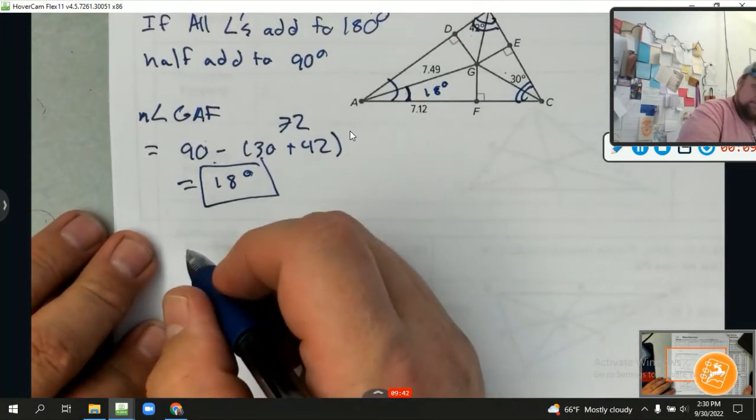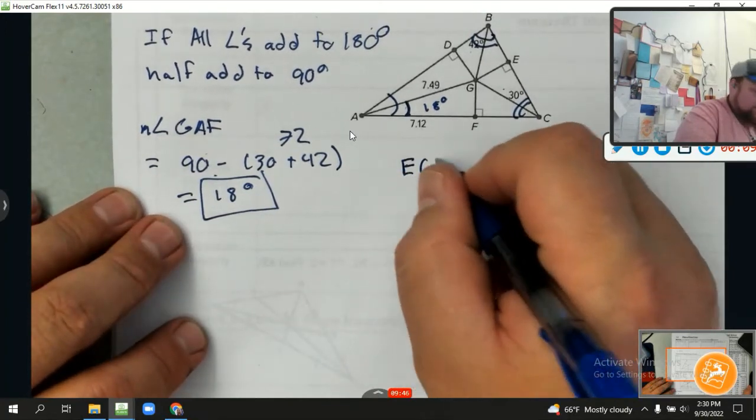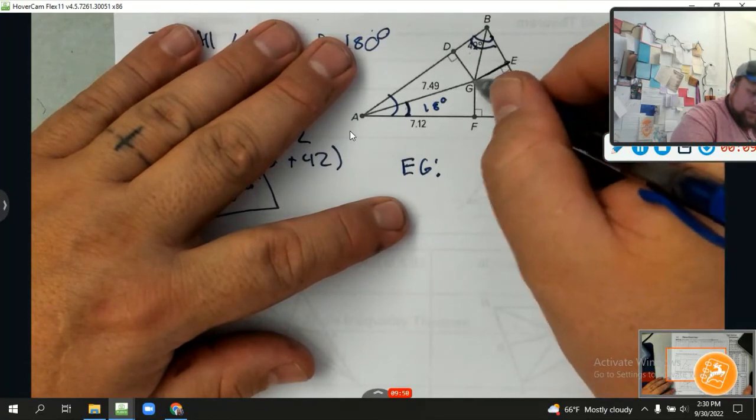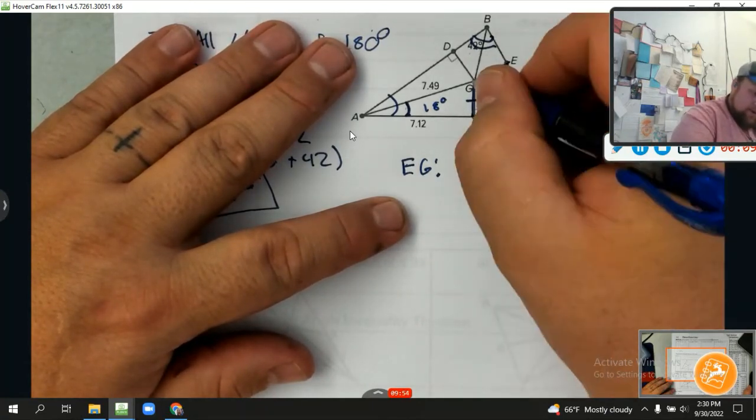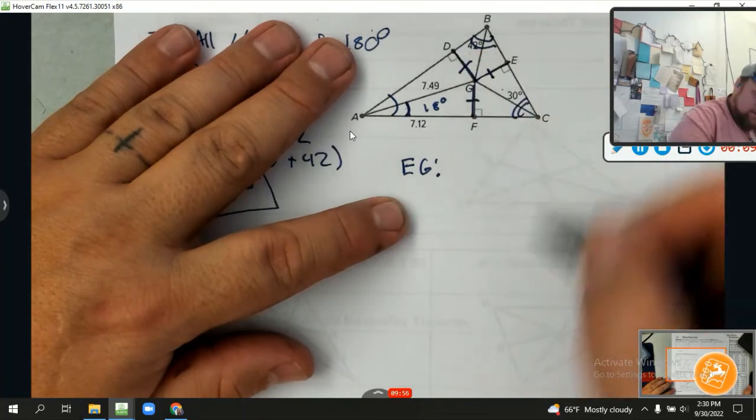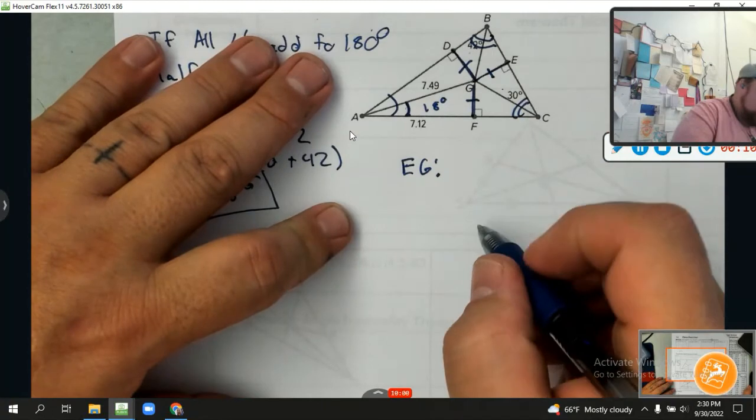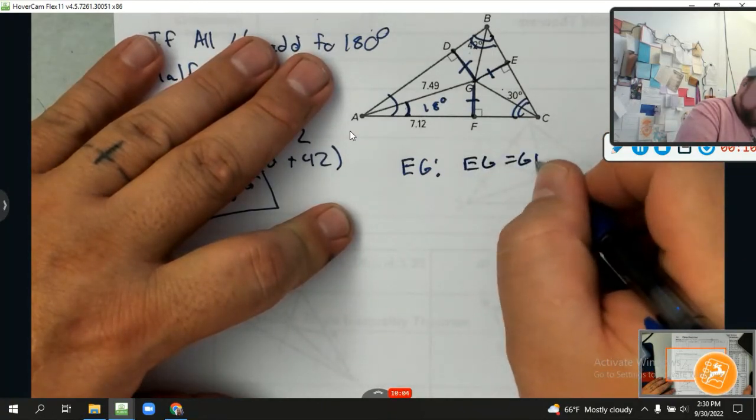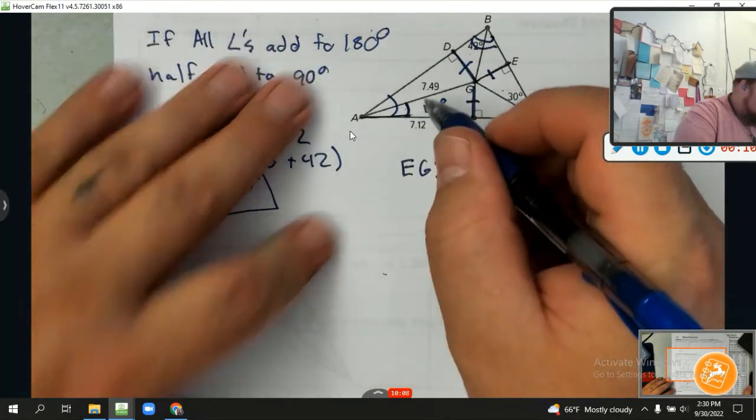Now it wants us to find EG. EG is a little bit more complicated. Here's what I'm going to tell you: EG is equal to GF, which is also equal to DG. Let's look at this triangle right here. So I know that EG equals GF, those are the same measure.